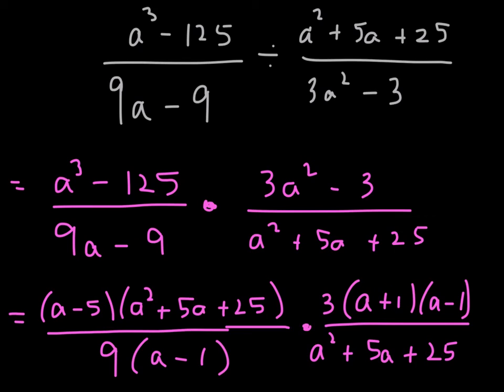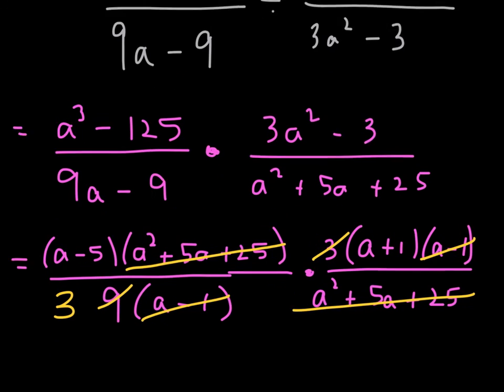Now, look for common factors. Let's see. A minus 1 divides out with A minus 1. A squared plus 5A plus 25, that trinomial factor, divides out with that denominator. 3 divides into 9 three times. And I think we're done cross-canceling.